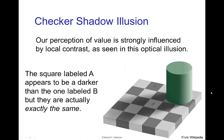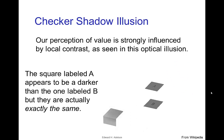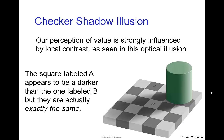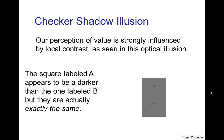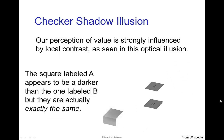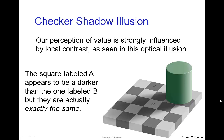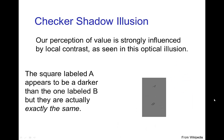Our ability to judge value is strongly influenced by local contrast — we noticed that in the example with the lunchboxes. And it's also the topic of this famous optical illusion: the squares marked A and B on this checkerboard. When we have the entire checkerboard, the squares appear to be different values. But as you see from the construction of the image, they're actually the same value — it's just our brain that, because of the contrast of the nearby squares, creates the illusion that A and B are actually at different values.